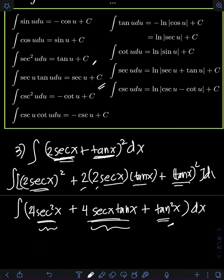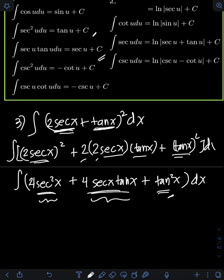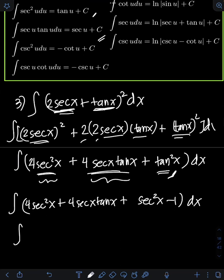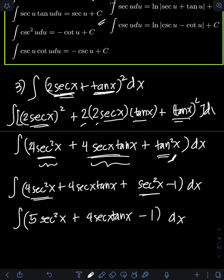What we will do is transform tan²x using its Pythagorean identity: tan²x equals sec²x minus 1. So we will have 4 sec²x plus 4 sec x tan x, then plus (sec²x minus 1). Notice that we can combine 4 sec²x plus sec²x, which becomes 5 sec²x plus 4 sec x tan x minus 1, dx.